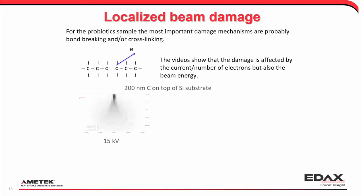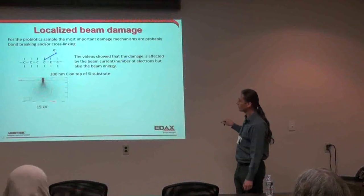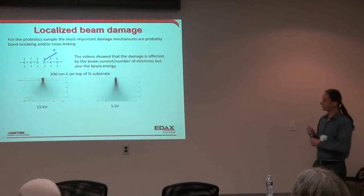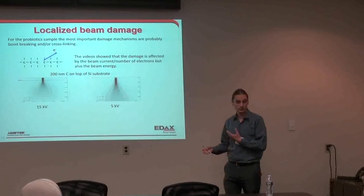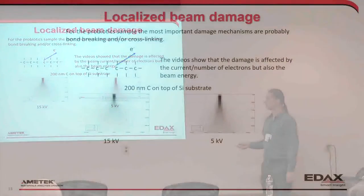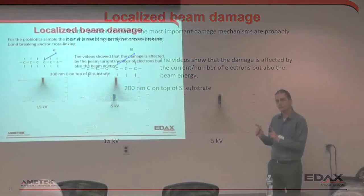The beam energy can have a slightly different effect. If we model 200 nanometers of carbon on top of silicon: at 15 kV, we're shooting through it to some extent — a lot of energy is still deposited in the carbon, but many electrons go through. At 5 kV, most of the energy is deposited inside the carbon and we don't reach the substrate. You might think you'd get less beam damage at higher acceleration voltages because you're depositing energy further down, but you're still depositing a significant amount in the surface layer and each electron has more energy — comparing absolute numbers, there may not be that much difference.